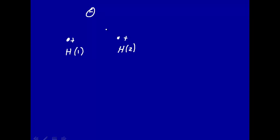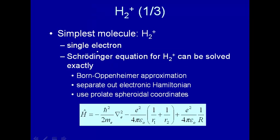If you make the Born-Oppenheimer approximation where these two nuclei are stationary, you can solve that exactly. It's a single electron, so when you set up the Schrödinger equation you can solve it exactly.